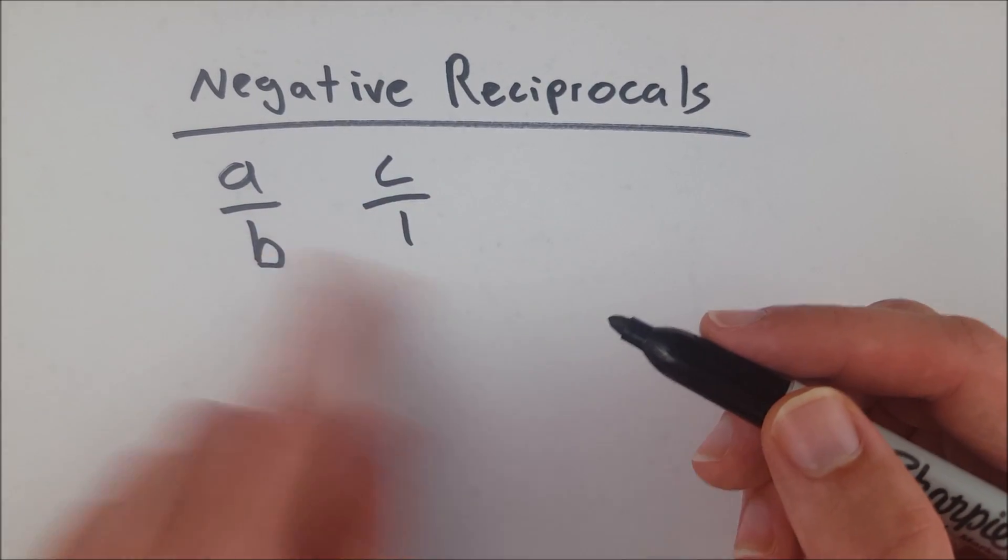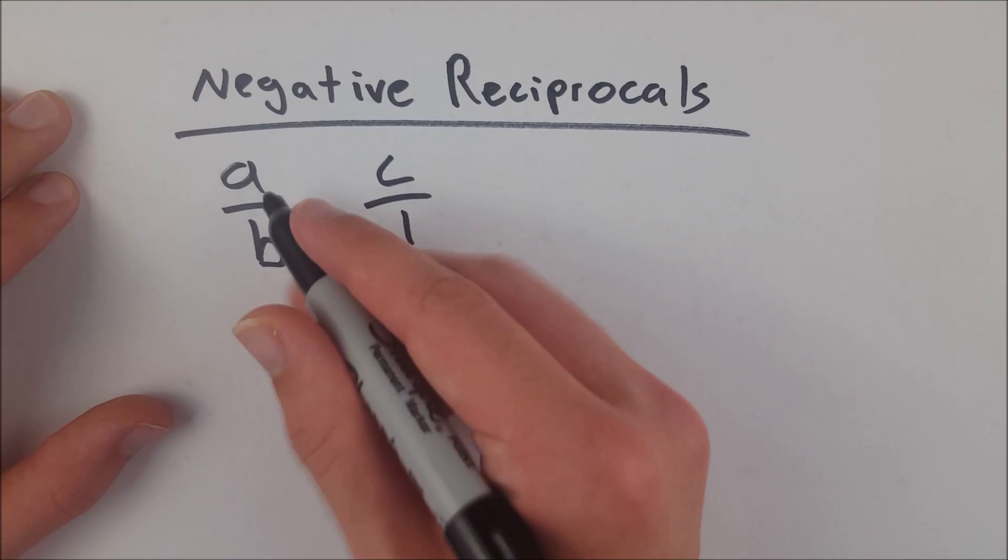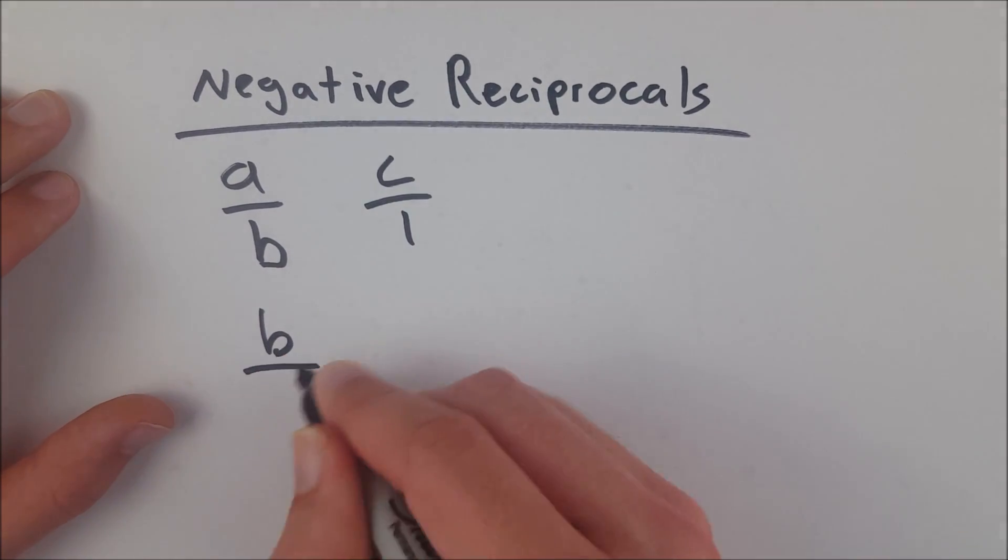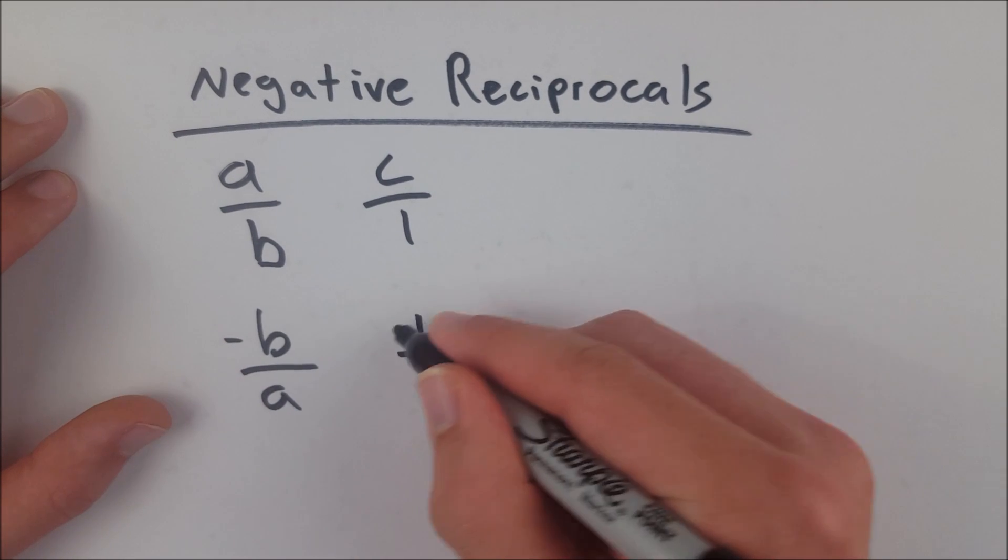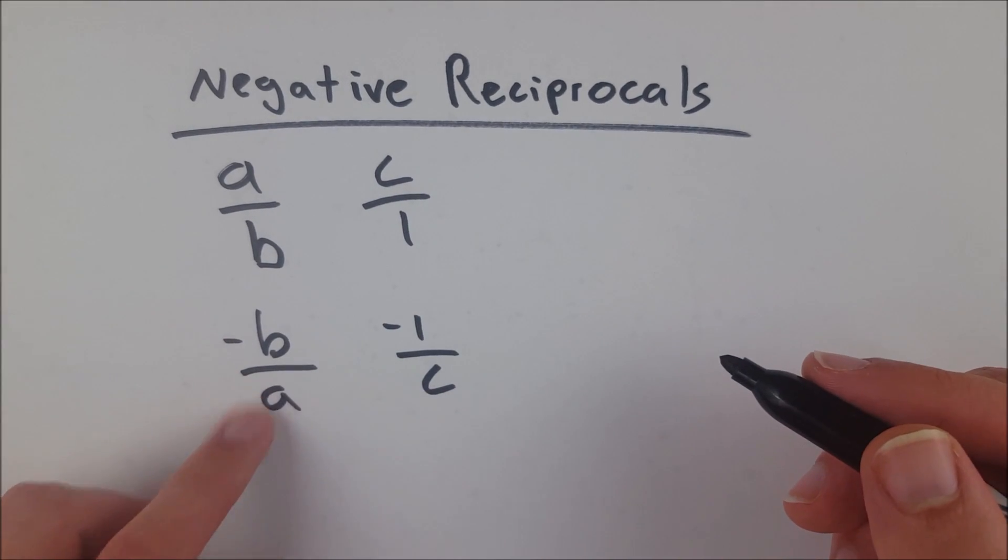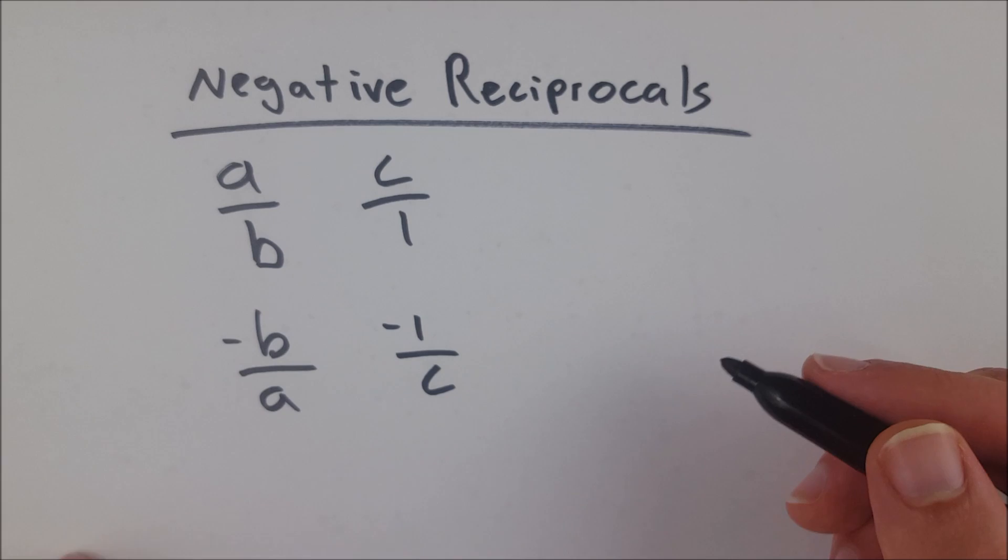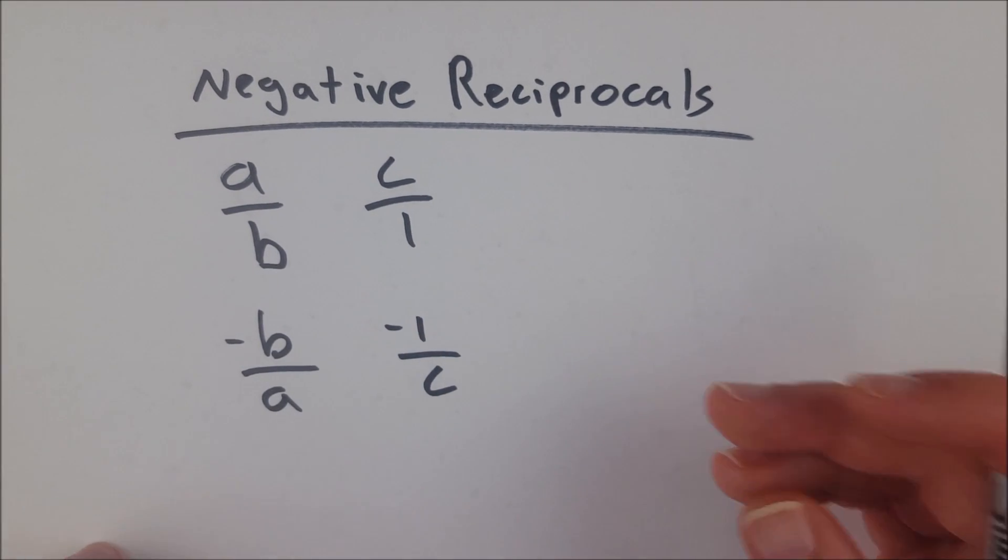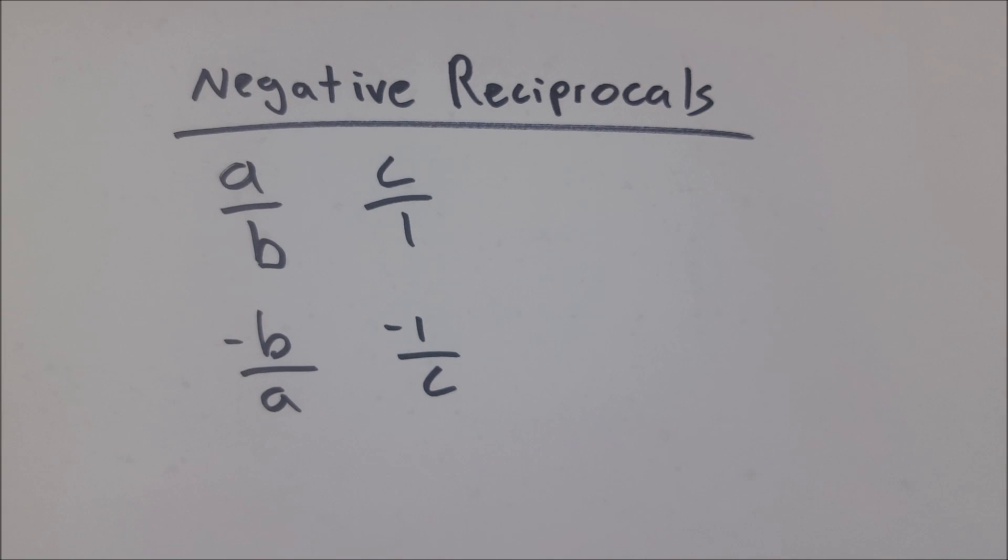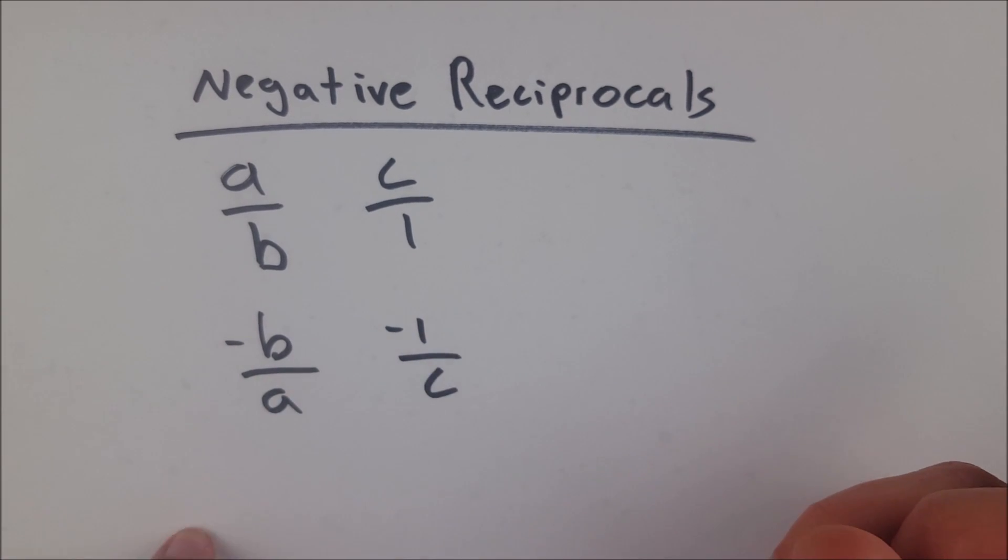So to find the negative reciprocal of either of these numbers, all you have to do is take the denominator, put it over the numerator, so that's b over a or 1 over c, and then just make the numerator negative. If the denominator was already negative or the numerator was already negative, then the whole thing is just going to become positive because a negative times a negative is a positive. So this and this are both negative reciprocals of this and this respectively.